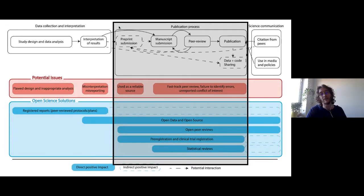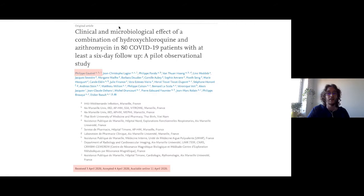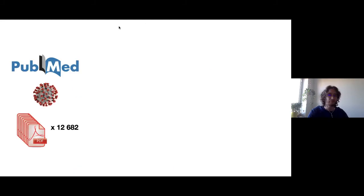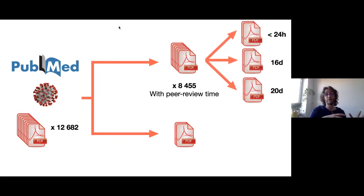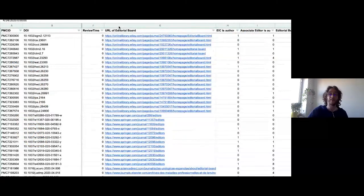Coming back to the publication process part of the knowledge creation pipeline: I mentioned before the paper that was published very fast with a co-author on the editorial team. We decided to see if this was a more common problem. We looked at PubMed and extracted data from all COVID-19 papers we had back in June last year — more than 8,000 papers with peer review time available. We categorized these into papers peer-reviewed in less than a day, in 16 days, and in 20 days, which were the mean and median review times. We had huge files and had to click on each paper to get the author list and manually check against the editorial team.